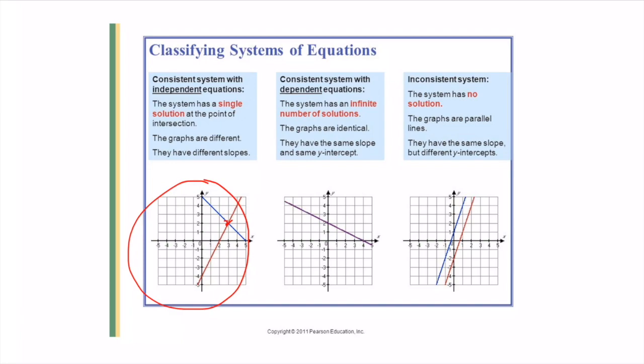The blue line has slope -1 and the red line has slope 2. The graphs are different and have different slopes, so we're going to end up with one answer — one intersection point.